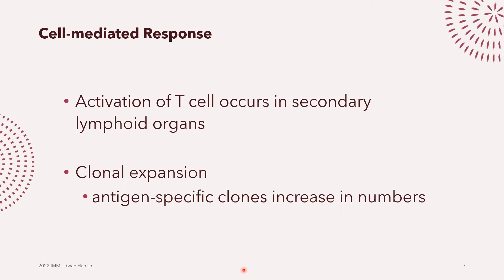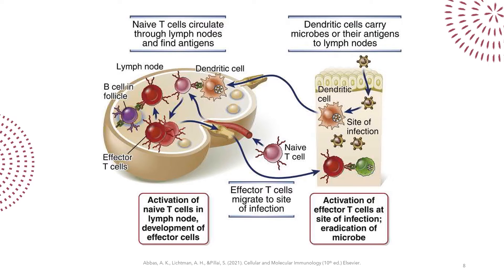Pay attention to the locations of this activation. Antigen-presenting cells such as dendritic cells capture the pathogen at the site of infection and conduct their phagocytosis there. They then carry that antigen from the site of infection to the lymph nodes, where the dendritic cells present the antigen to naive T cells — this presentation happens in the lymph node, not the site of infection.